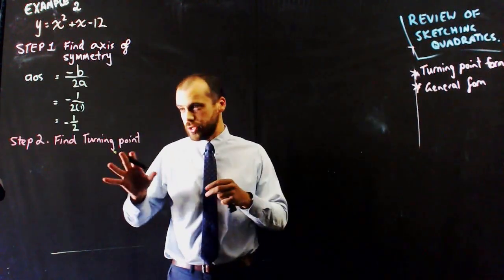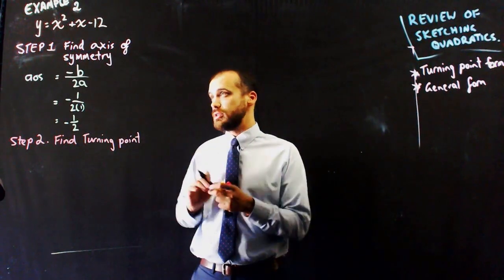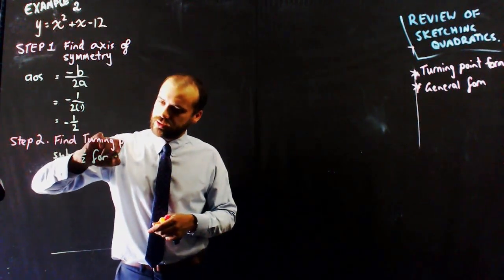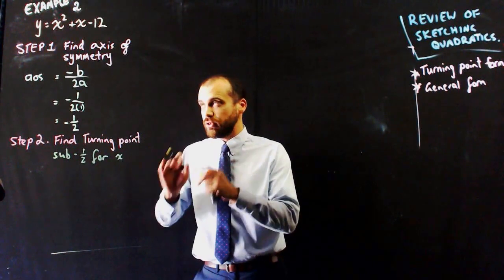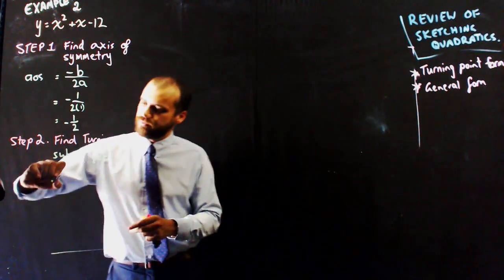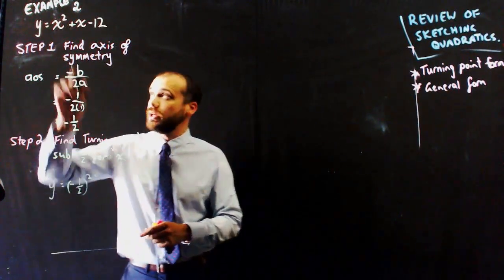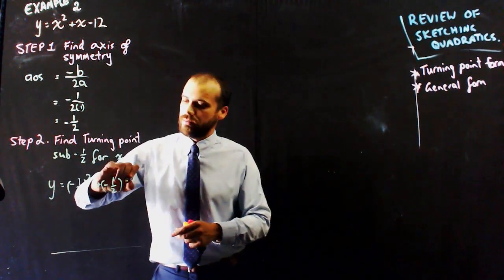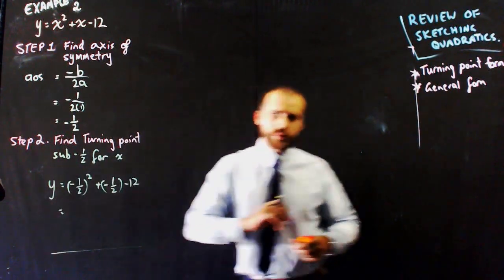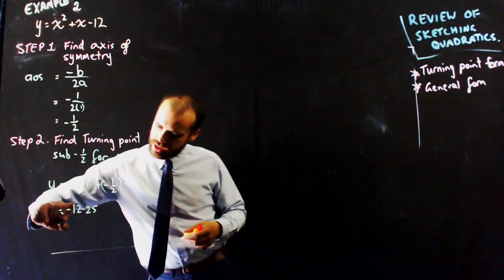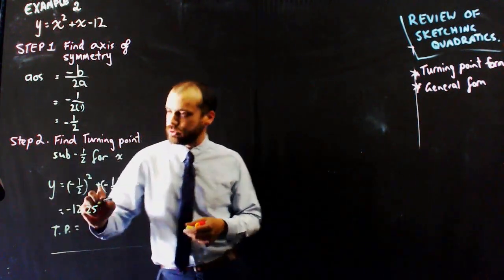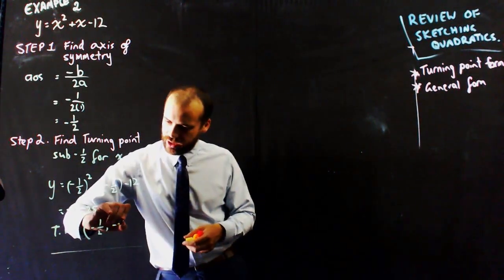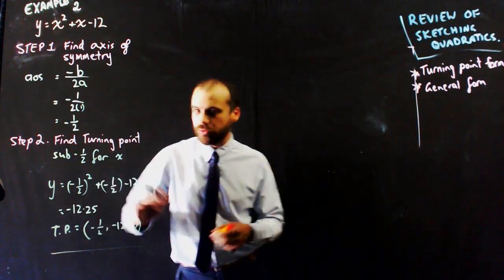Step 2: find the turning point. The turning point lies on the axis of symmetry, so substitute x equals negative one half into the equation. y equals negative one half squared plus negative one half minus 12. Typing that into the calculator gives negative 12.25. So the turning point is negative one half, negative 12.25, or negative 12 and a quarter.